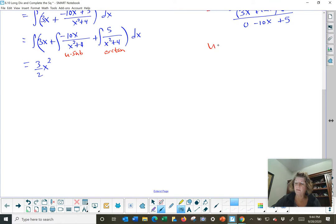For the u sub, we would let u equal x squared plus 4. du would equal 2x dx. And now I'm trying to make negative 10. If you wanted to, you could say I'm multiplying by negative 5 du equals negative 10x dx. And then just substitute that in. Negative 5u replaces negative 10x dx. That's fine.